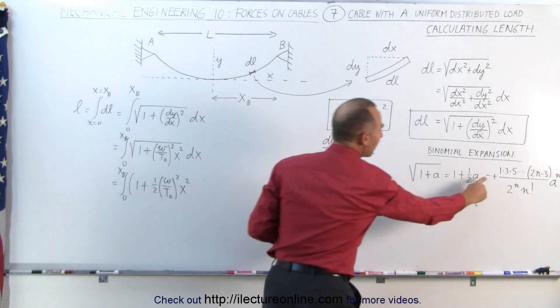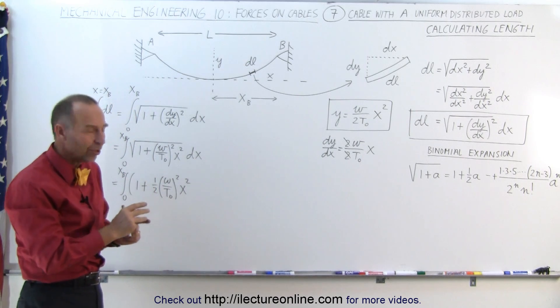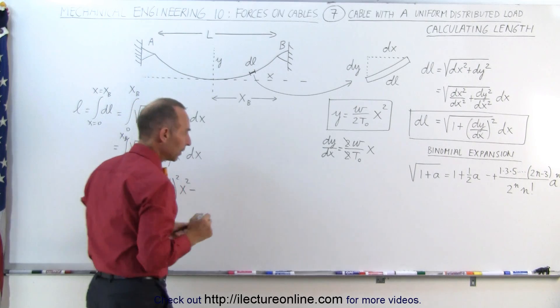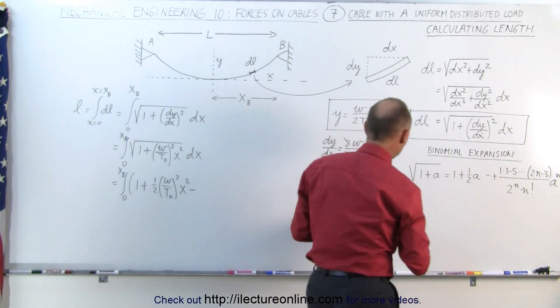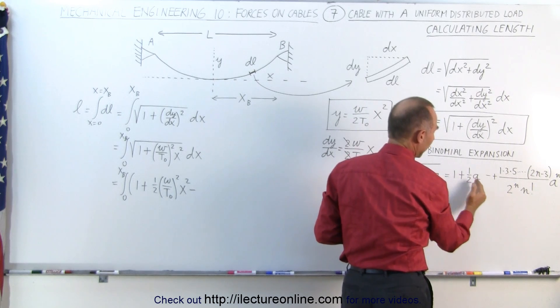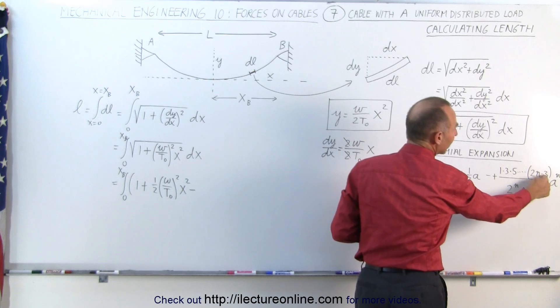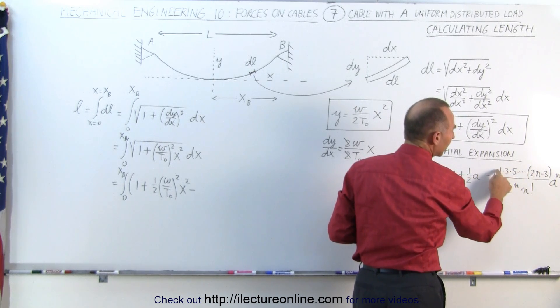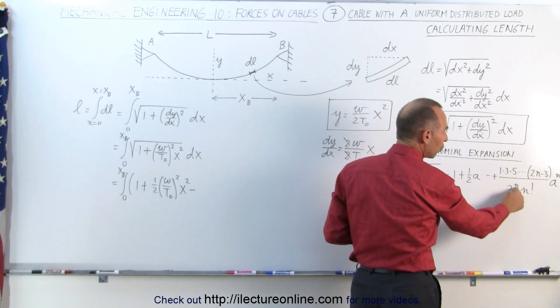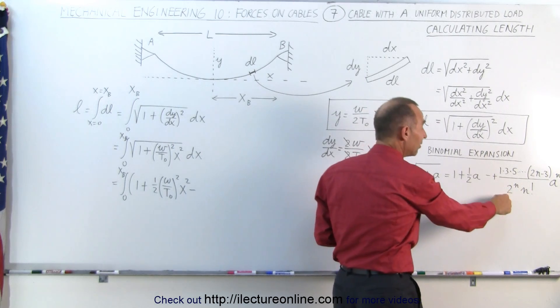Now the next one will be minus. Typically, the first two terms are sufficient, but let's add one more term so you can see how the binomial expansion works. So minus. Now notice that in this case, n will be 2, because here n is 0, n is 1, here n is equal to 2. If n is equal to 2, that 2 times 2 minus 3 is equal to 1. The numerator becomes 1. The denominator is 2 to the n power. 2 squared, that's 4. And n factorial, if n is 2, that's 2. 2 times 4 is 8.